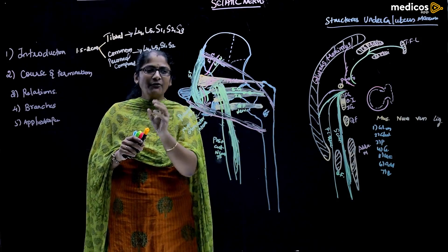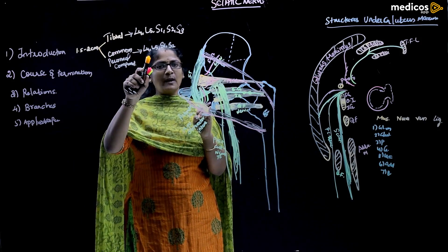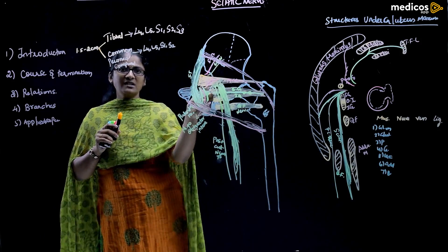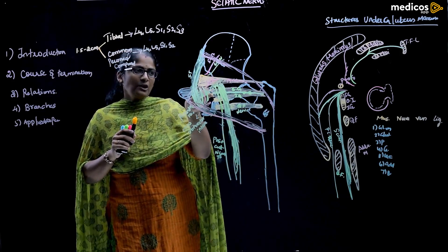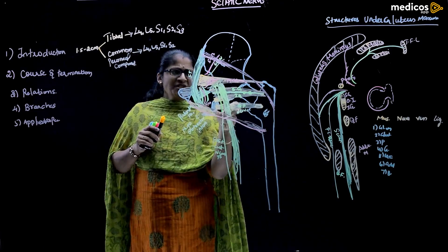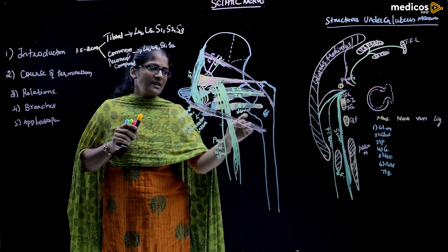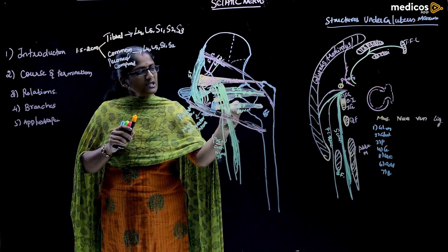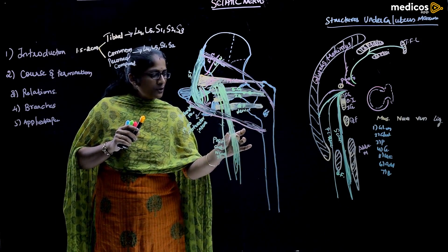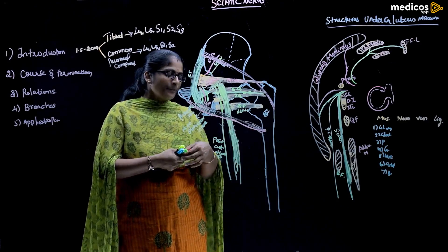Sometimes it exits between the parts of the piriformis or at the superior border, but most often from the inferior border. Once it comes out, it runs over the dorsal aspect of the body of the ischium with lateral convexity. It then runs through the gluteal region and exits at the lower border of the gluteus maximus into the posterior aspect of the thigh.